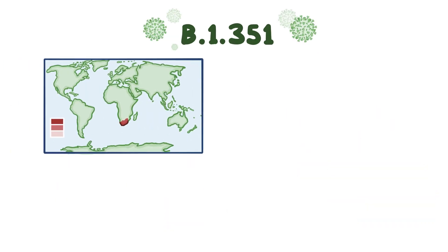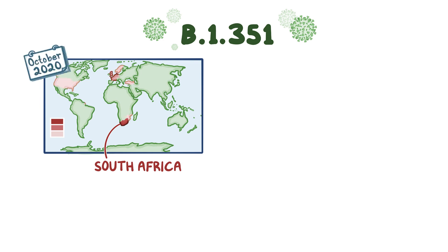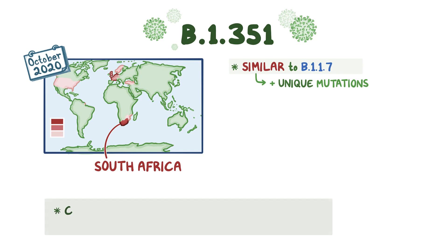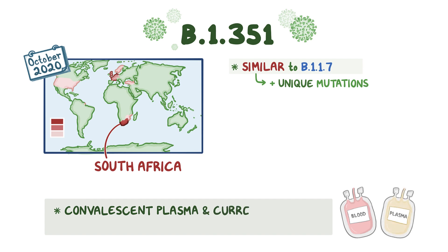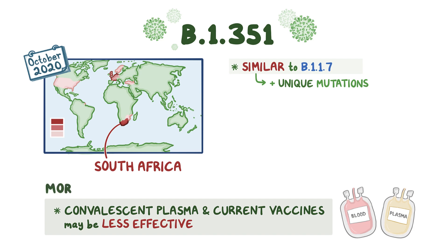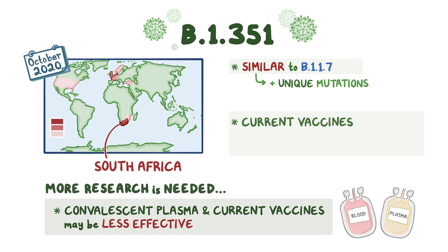B1351 was first identified in South Africa in samples dating back to October 2020. It has also been found in samples from other countries, including the US, as of January 2021. B1351 has several of the same mutations as B117; however, it has enough unique mutations to be considered its own strain. Some early research suggests convalescent plasma and the current COVID-19 vaccines may be less effective against this strain. However, these are preliminary studies, and more research is needed to confirm these concerns. That said, the current COVID-19 vaccines still show prevention of severe COVID-19 symptoms and hospitalizations.